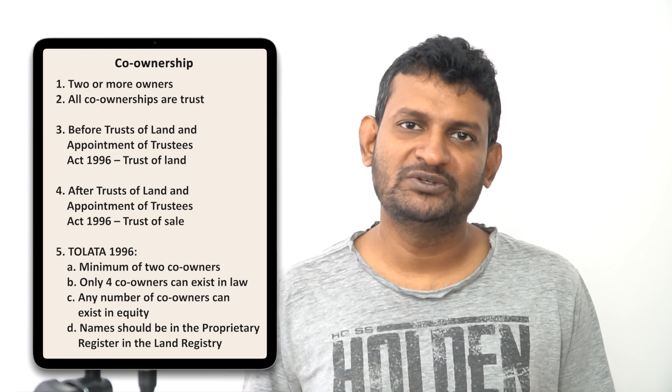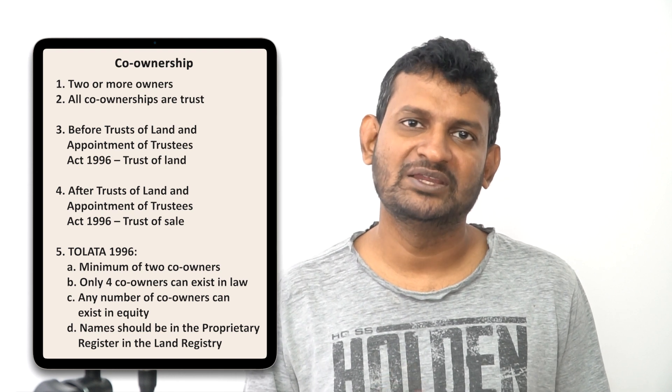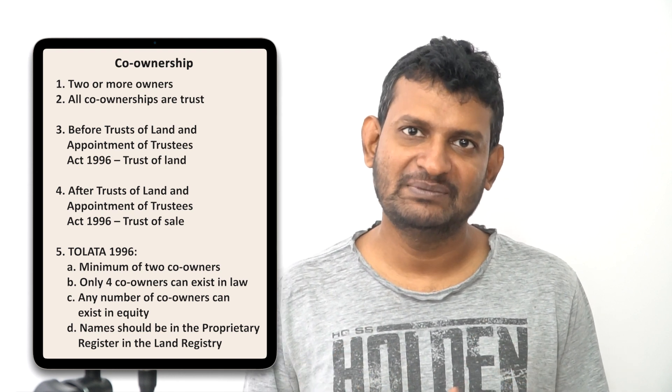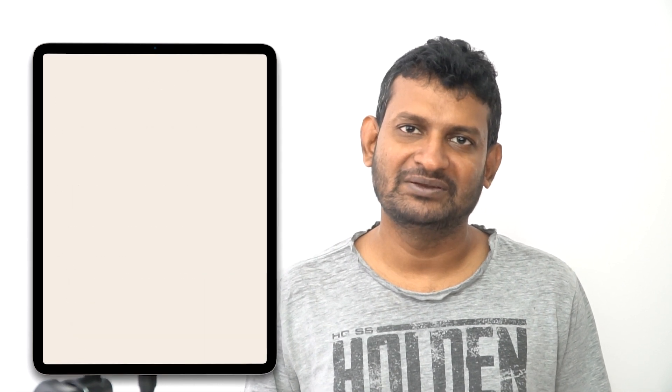Remember there are two types of co-ownership: joint tenancy and tenancy in common. We will learn about various trust types — resulting and constructive. We will also learn about severance later on. So all in all, we now know the basics of co-ownership: what it is, the two types being joint tenancy and tenancy in common, that co-ownerships are trusts of land, and the number of people that can exist both at law and in equity.